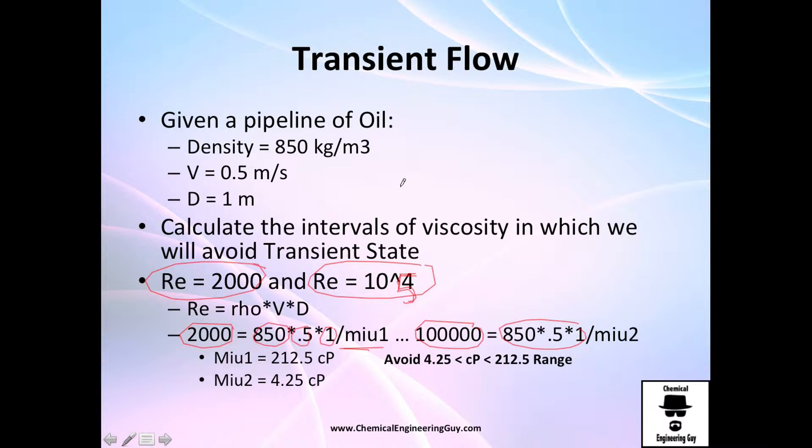Let's say we cannot change anything - we cannot change the velocity, we cannot change the diameter of the pipe and the fluid won't change. So the only thing we can do is to heat or increase the temperature to change the viscosity. From mu 1, which is the laminar flow, I have this one. And for turbulent flow I have 4.25.